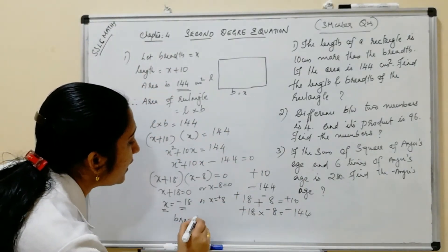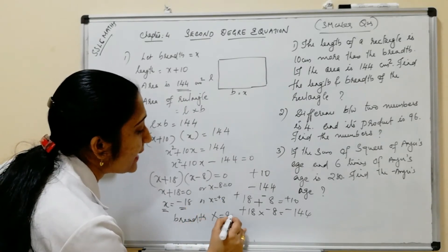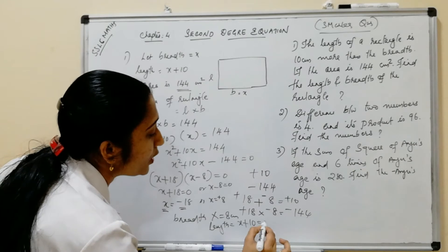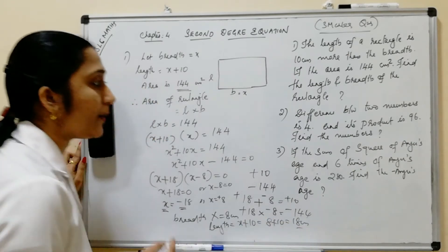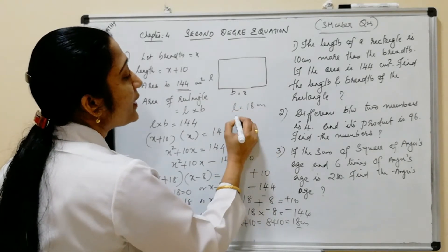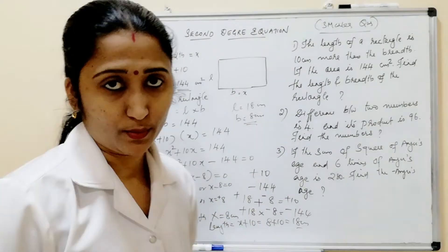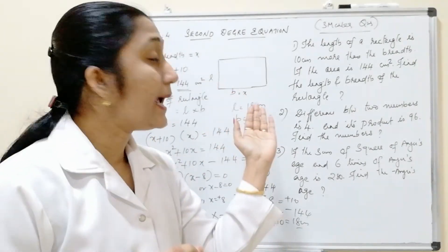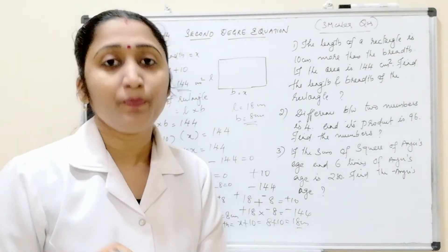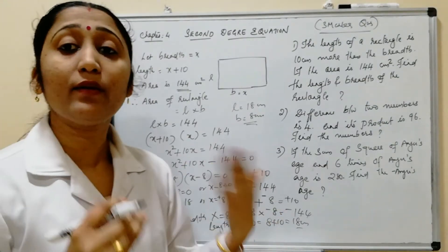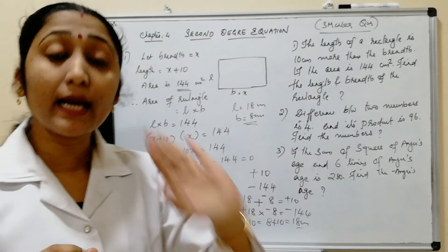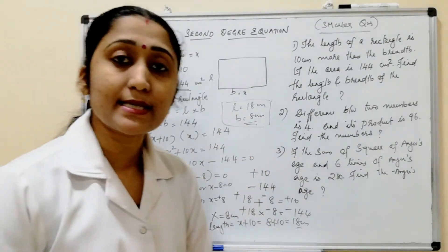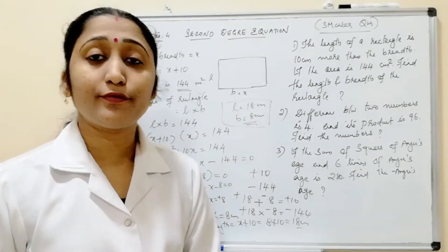Therefore, breadth = x = 8 cm. Length = x + 10 = 8 + 10 = 18 cm. So length = 18 cm and breadth = 8 cm. When you get both positive and negative values, you must choose only the positive value because length and breadth of a rectangle cannot be negative. This is the answer for the first question.